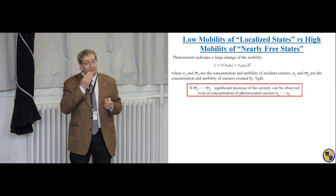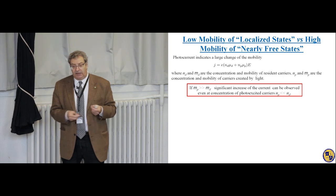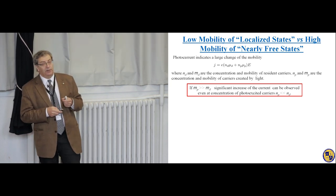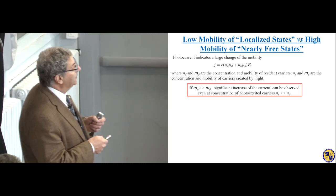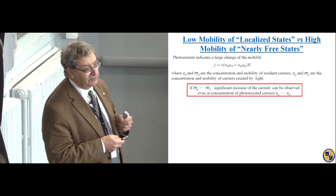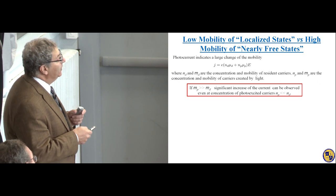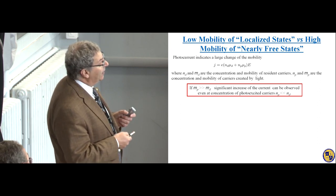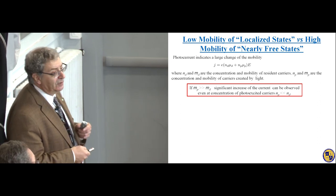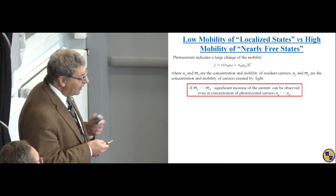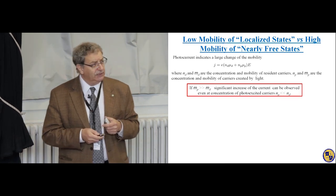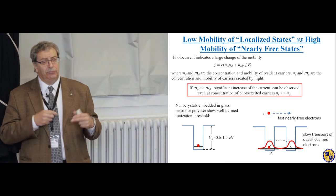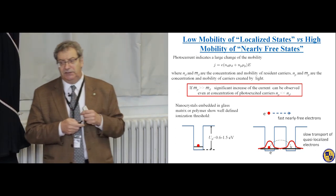The increase of photoconductivity cannot be explained by an increase in number of carriers, and is connected with a huge change of carrier mobility. This idea can be summarized with a simple expression considering two contributions to the current: one connected with resident carriers (dark current), and another connected with photoexcited carriers. If the mobility of photoexcited carriers is much larger than the mobility of resident carriers, you can get a significant increase of current even if the concentration of photoexcited carriers is much smaller than the concentration of resident carriers. This phenomenon was known in bulk semiconductors, but three-dimensional arrays of nanocrystals possess additional properties.